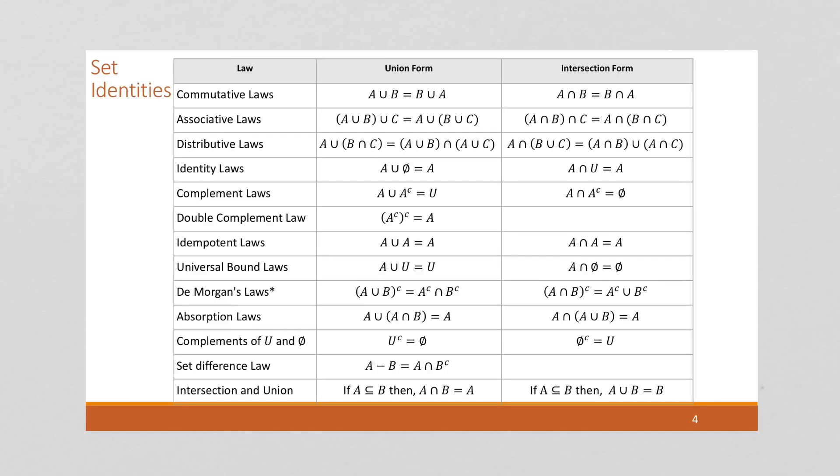So here are all these set identities listed out and typed up much more nicely than I can write by hand. You can pause this if you want to write any of these down now.